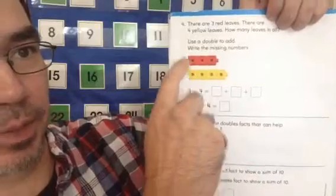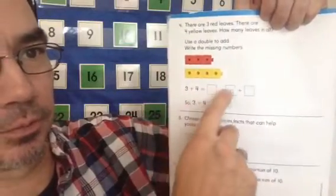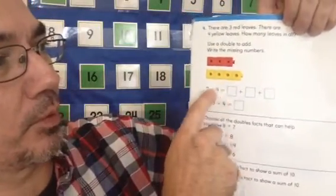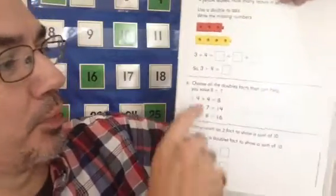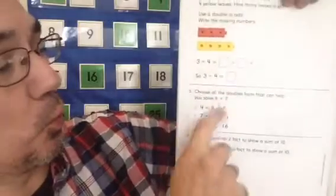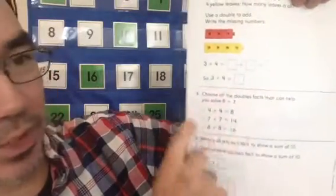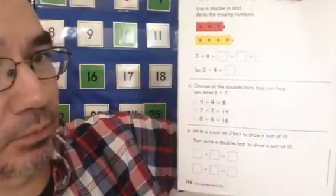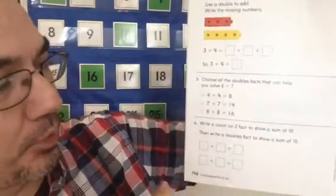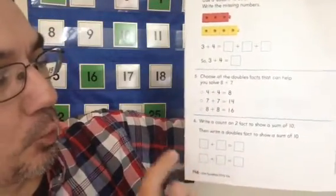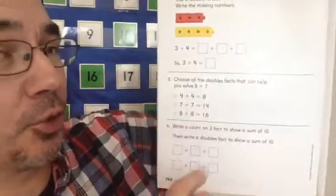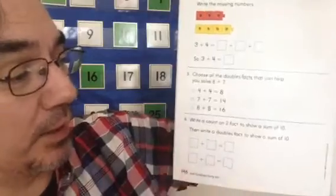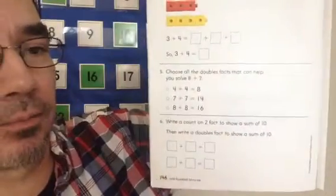Solve this problem here. We have 3 and 4. Right? This is it. I don't need you to do this. If you want to make the double here, that's fine. But, I just want you to solve it. This one, there's 8 plus 7. Can any of these doubles facts help you solve 8 plus 7? Just color that in. And, we're going to do, one of these is going to do a count on 2 facts. So, you're going to add 2 to a number to make 10. So, you do the first one. And then the second one, what doubles fact equals 10? What doubles fact equals 10? Okay.